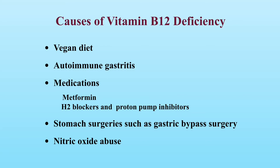Vitamin B12 deficiency also occurs in people with autoimmune gastritis. This is an inflammatory condition in which our immune system attacks the parietal cells in the stomach that produce the intrinsic factor. The intrinsic factor plays a key role in the absorption of vitamin B12. With inadequate production of intrinsic factor in people with autoimmune gastritis, vitamin B12 absorption is compromised and vitamin B12 deficiency occurs.